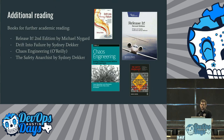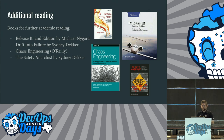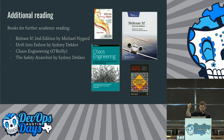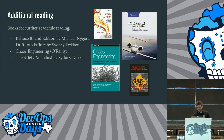Some additional reading: Release It by Michael Nygaard, Drifting into Failure by Sidney Dekker, Chaos Engineering — a little short book written by the guys from Netflix, great to pick up and often free at conference vendor booths. And The Safety Anarchist by Sidney Dekker, which is pretty good too. All of these are on Amazon and fairly affordable.